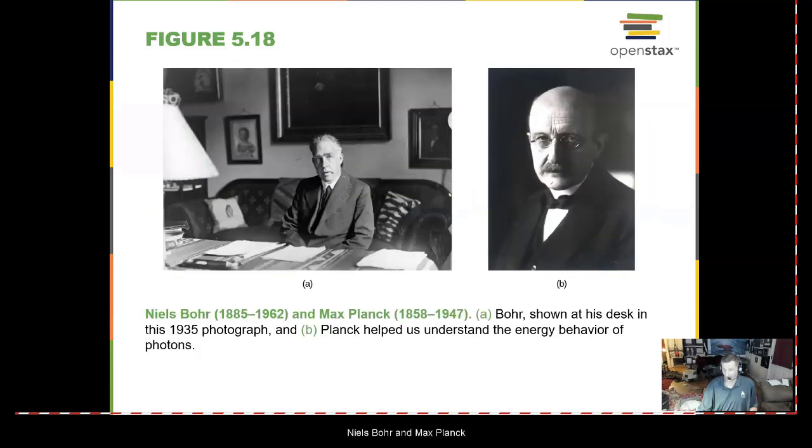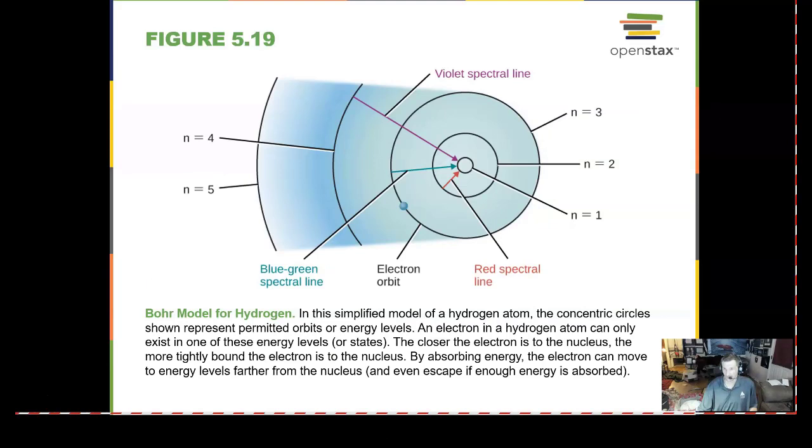Niels Bohr and Max Planck described how the atom would behave under certain conditions. In the Bohr model for hydrogen, you have shells outside of the nucleus. And in these shells, you can only have certain energies come in or go out.